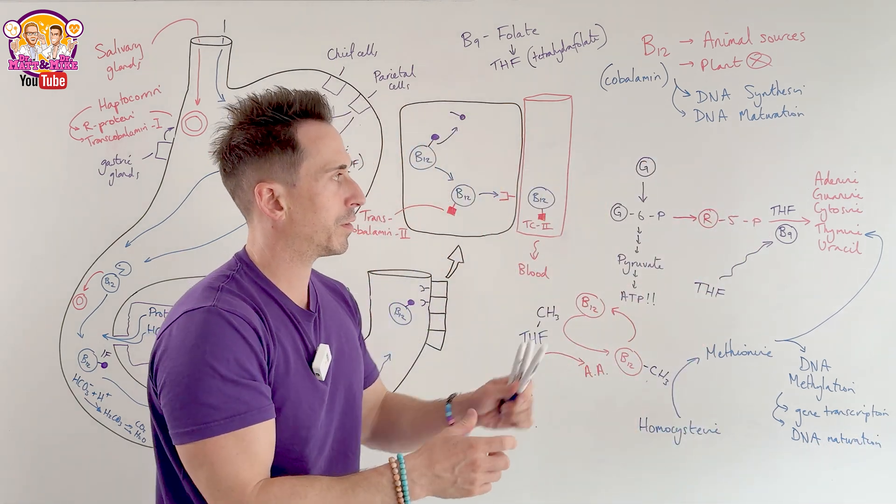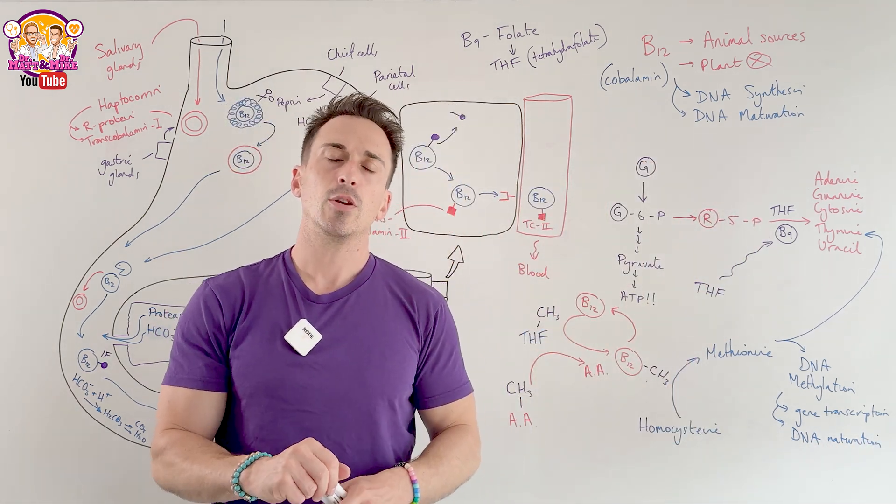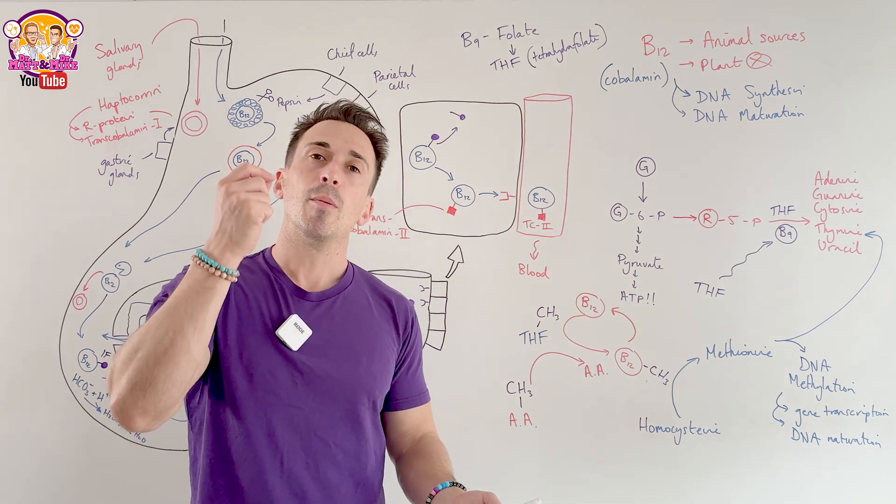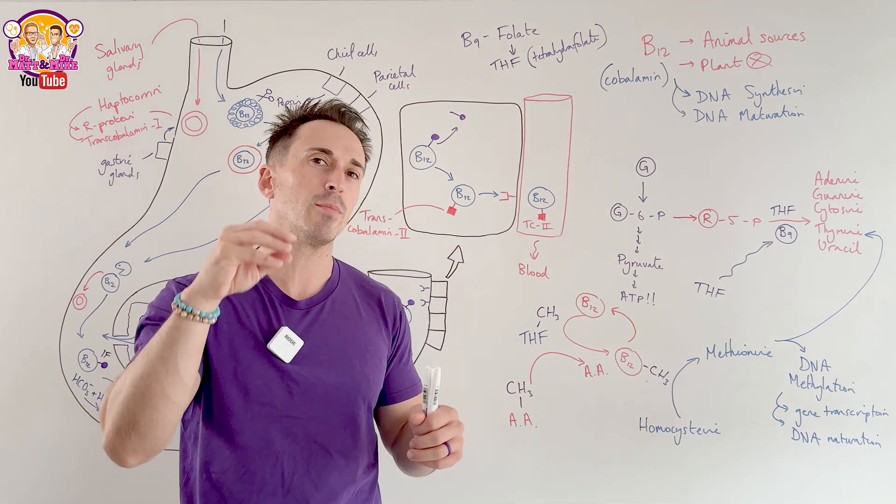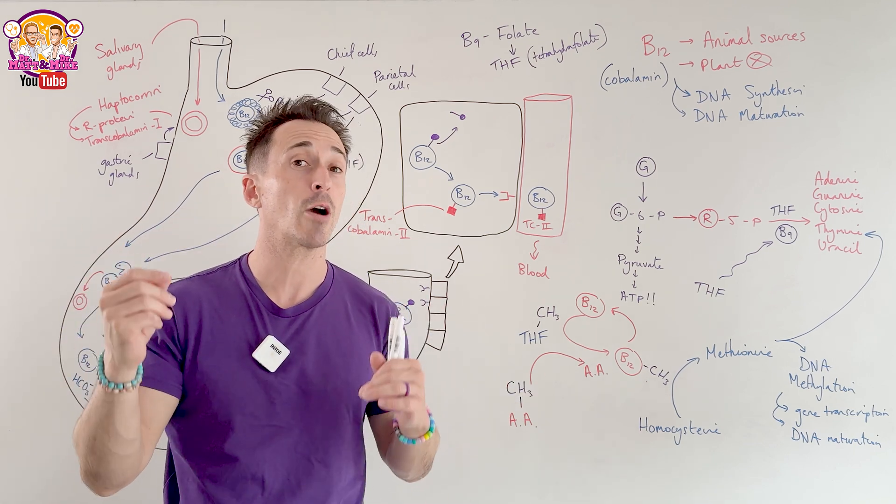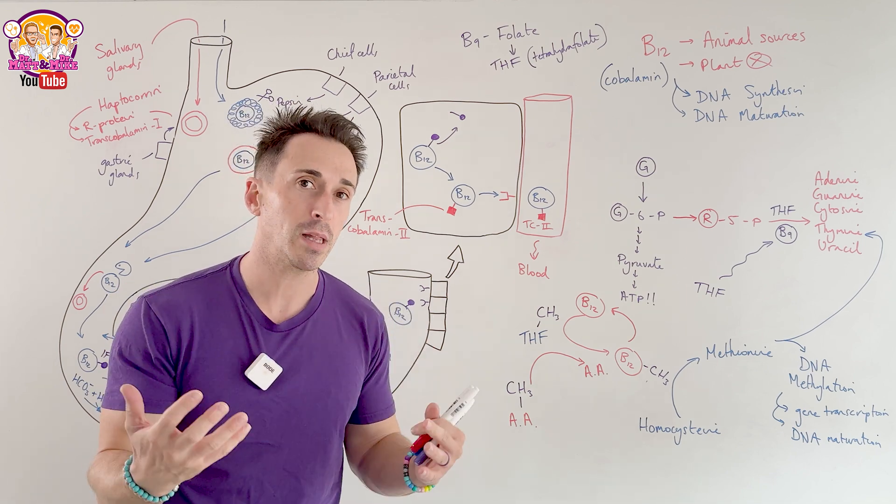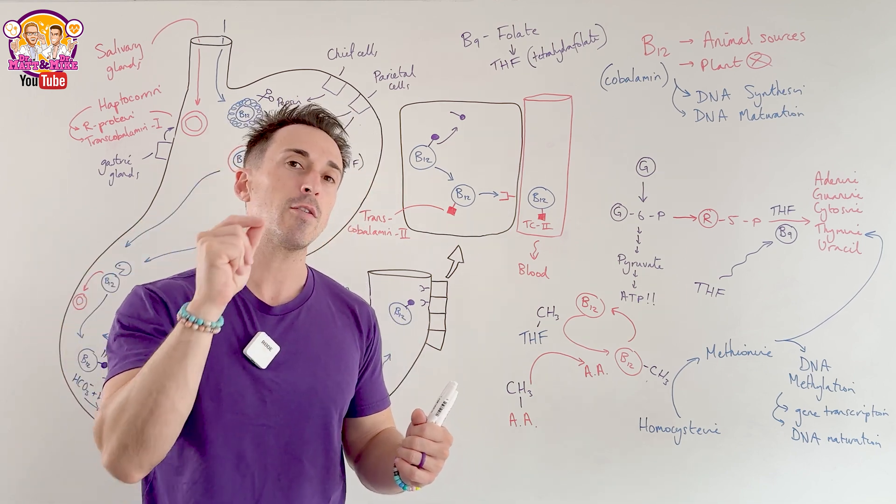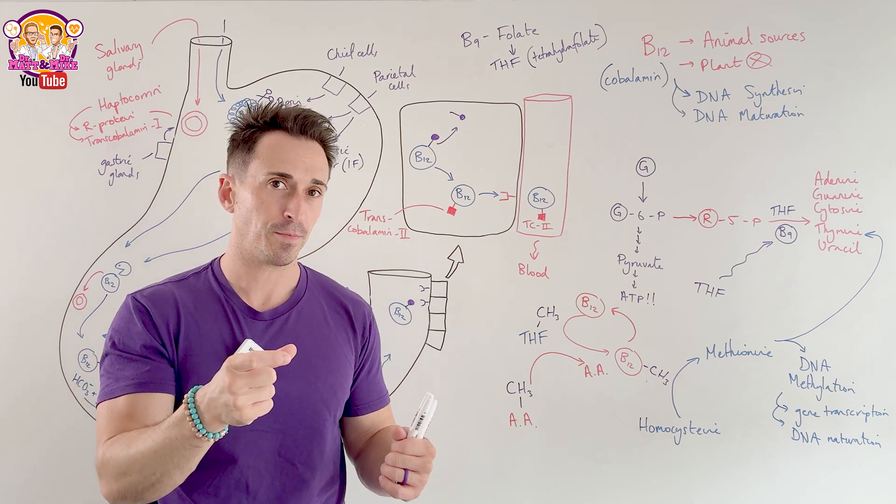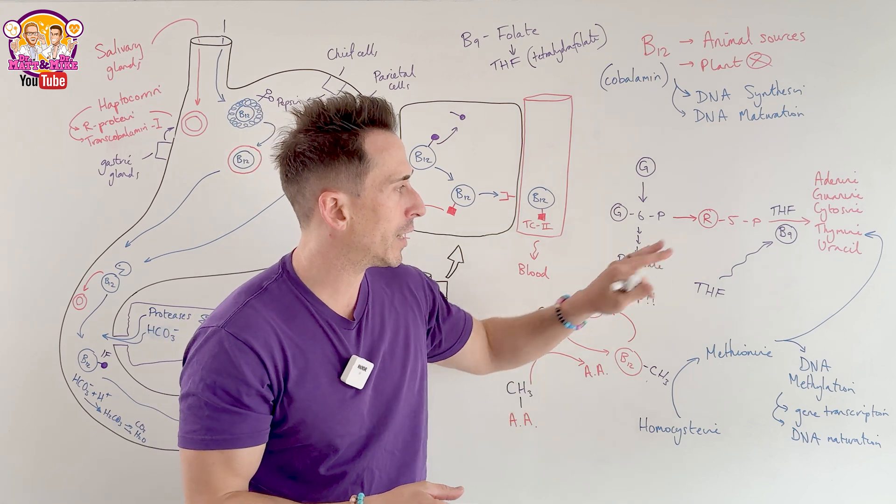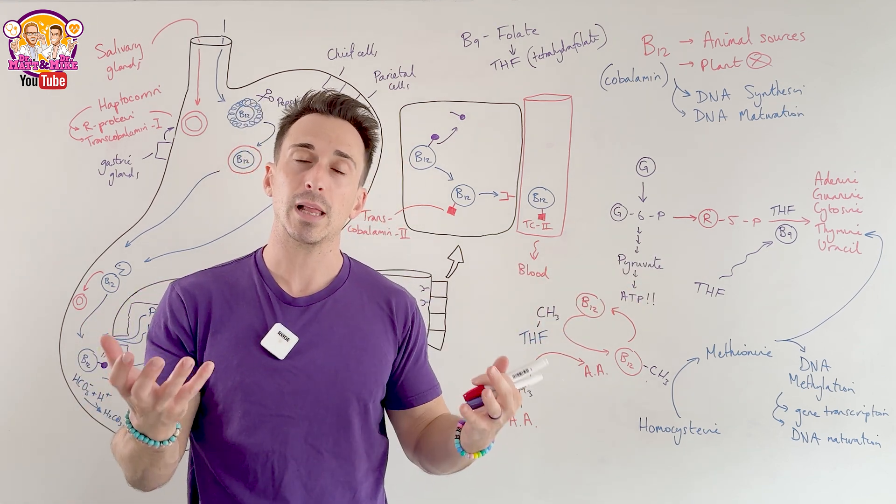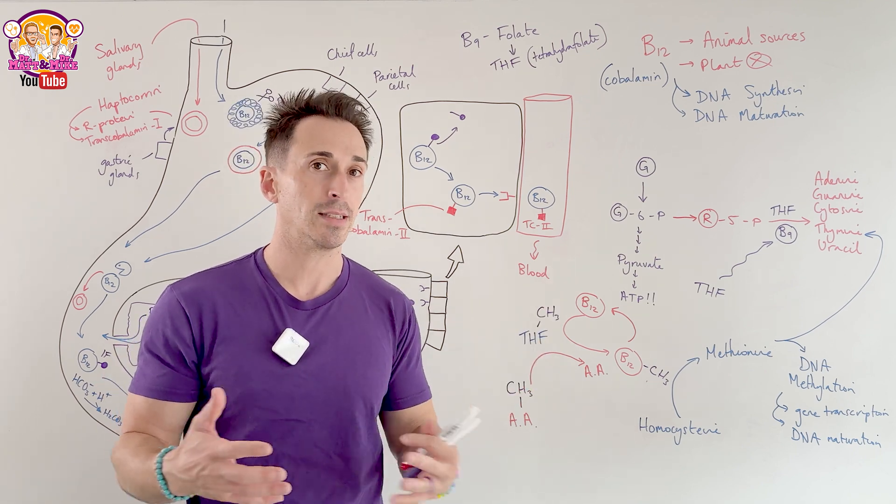And if we don't have B9 and B12, this can't occur. Now you might think that all the cells of our body need DNA synthesis and maturation to occur. That's true. But there's going to be some cells that are more sensitive to this. These are the cells that are produced in high quantities very quickly, like our red blood cells. We make 2 million red blood cells every second. So they're very sensitive to any small disruptions in DNA synthesis and maturation. And therefore, if you don't have enough B12 or B9, you can get an anemia that forms. So we don't have enough functional red blood cells because the DNA synthesis and maturation isn't occurring.